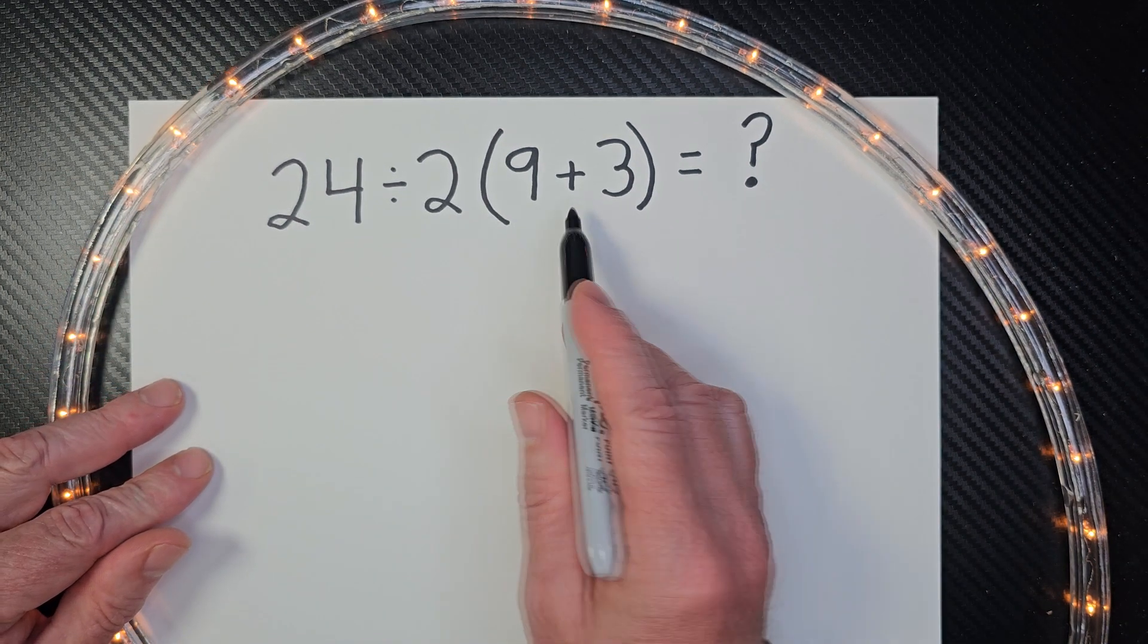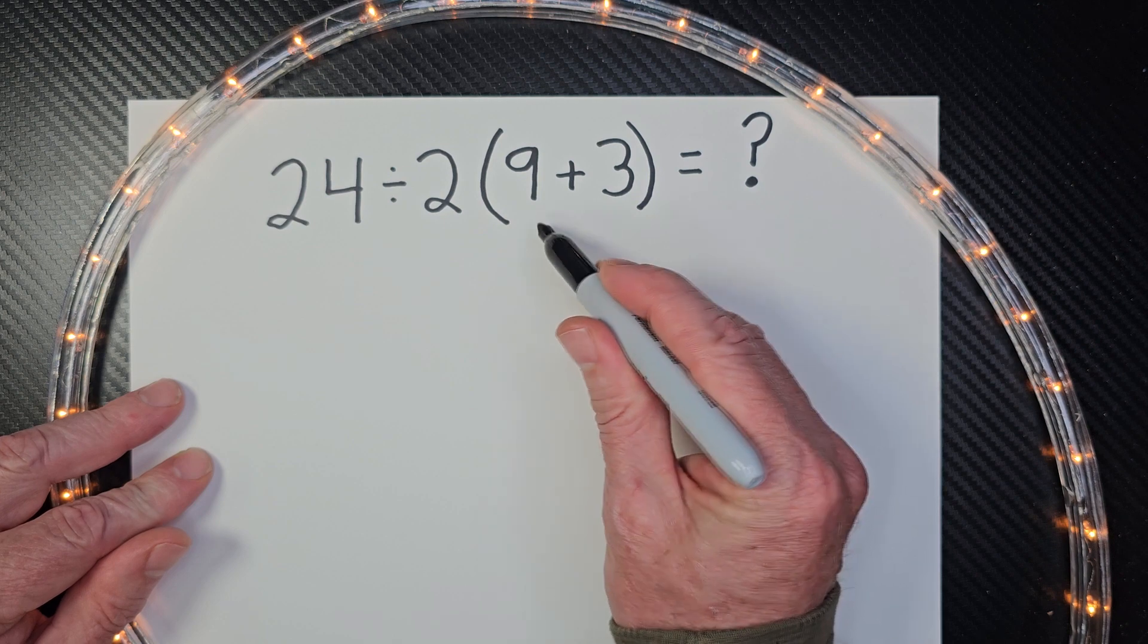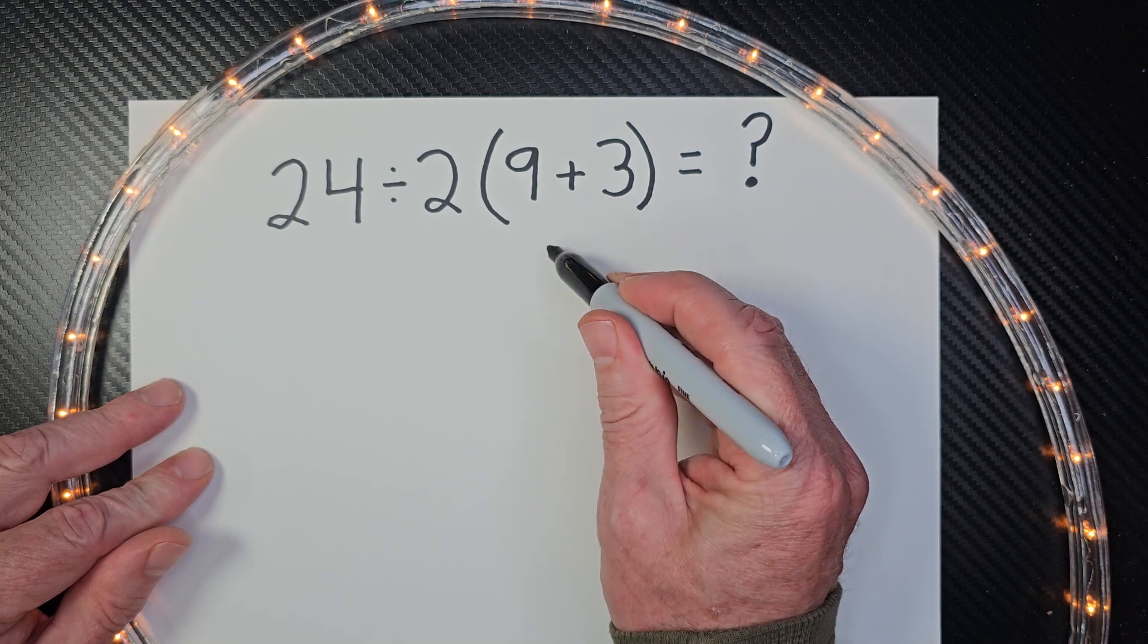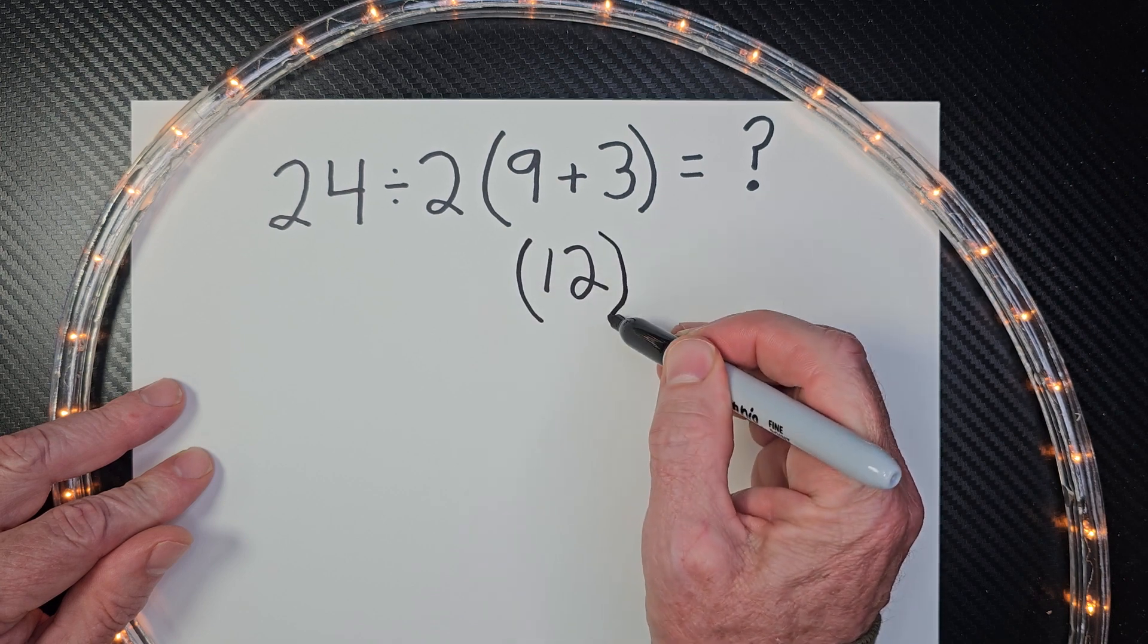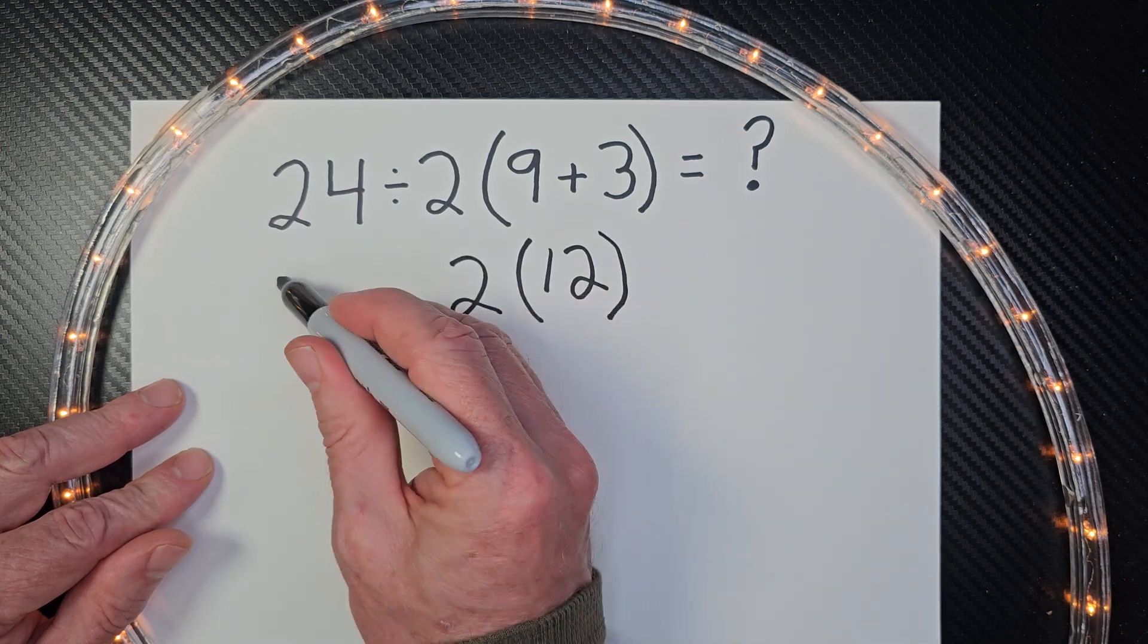We're going to do what's inside parentheses first. Follow the directions. 9 plus 3, what is it? 12. So we put 12 right here. I'm going to keep those parentheses around there. Put the 2 here and then 24.